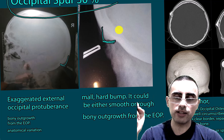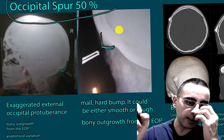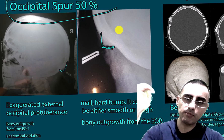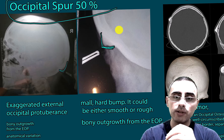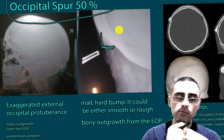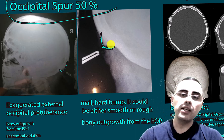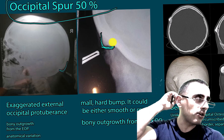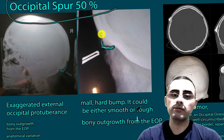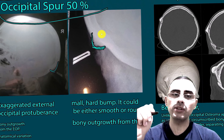Occipital spur is usually symmetrical and does not require any treatment — it is only an anatomical variation. Sometimes people feel it and become afraid because of the bony overgrowth, but usually there are no symptoms. If it compresses any nerves, causing pain, or if it is very large, surgical removal is possible, but in most cases no treatment is needed.